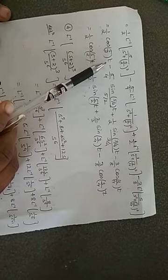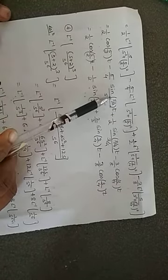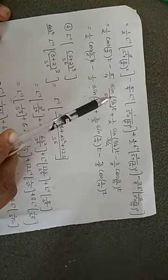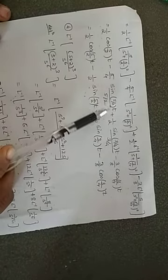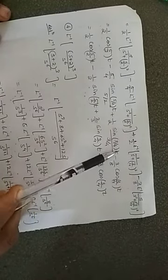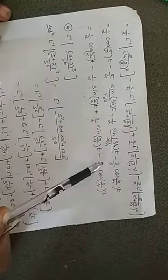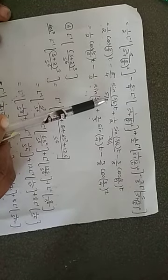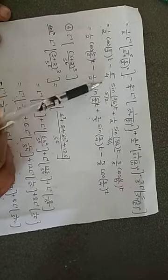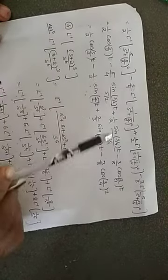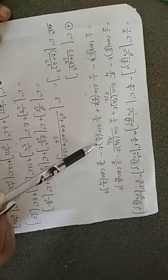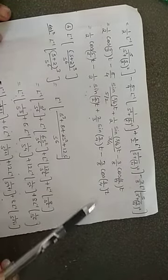So the result is: 1 by 2 cos of 5 by 2·t, minus 5 by 4 times — since 5 by 2 is not in the numerator — sine of 5 by 2·t upon 5 by 2. Then plus 1 by 2 times sine of 3 by 4·t upon 3 by 4, minus 3 by 8 cos of 3 by 4·t. After simplification, the fractions cancel to give 1 by 2 sin of 5 by 2·t, plus 2 by 3 sin of 3 by 4·t, minus 3 by 8 cos of 3 by 4·t.